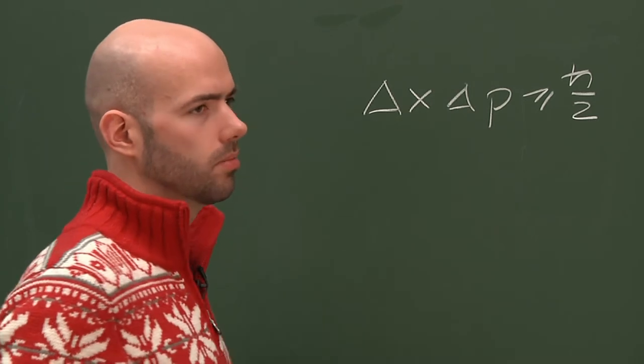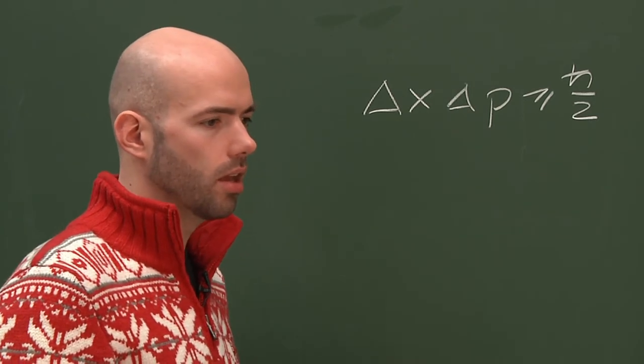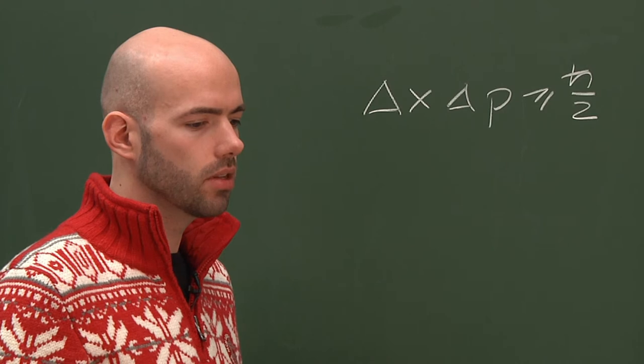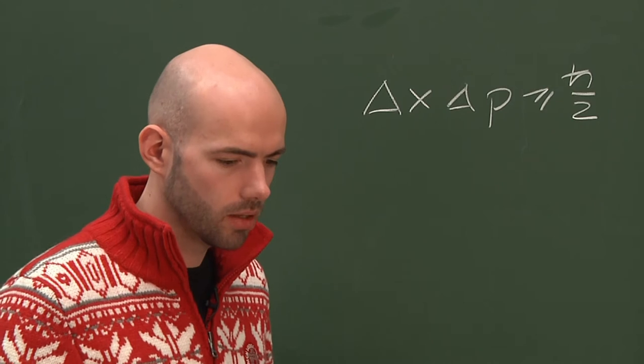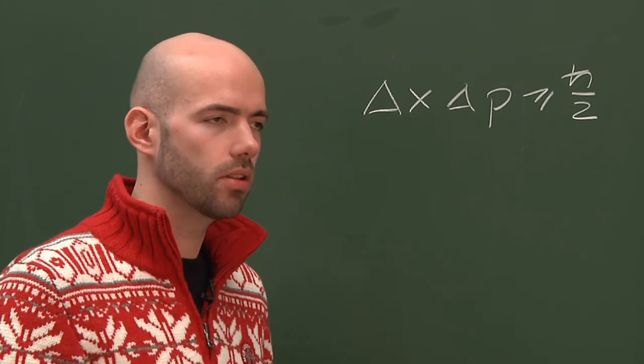Take the position variance, for example. What does it tell us? If you have a series of position measurements with identically prepared systems, then every measurement will yield a definite outcome.